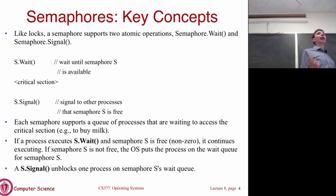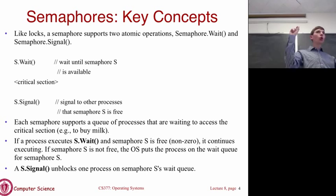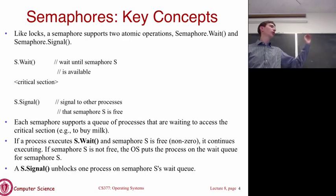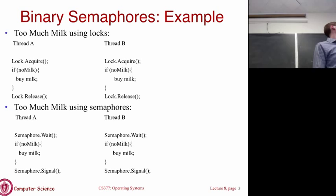The way a semaphore differs from a lock is that the value can be greater than one, meaning multiple processes can hold the semaphore at the same time. With a lock, as soon as one process takes control, everyone else blocks. With a semaphore, higher values allow multiple processes — say three — to use it concurrently. Let's look at the simple binary semaphore case first, which is essentially the same as a lock.